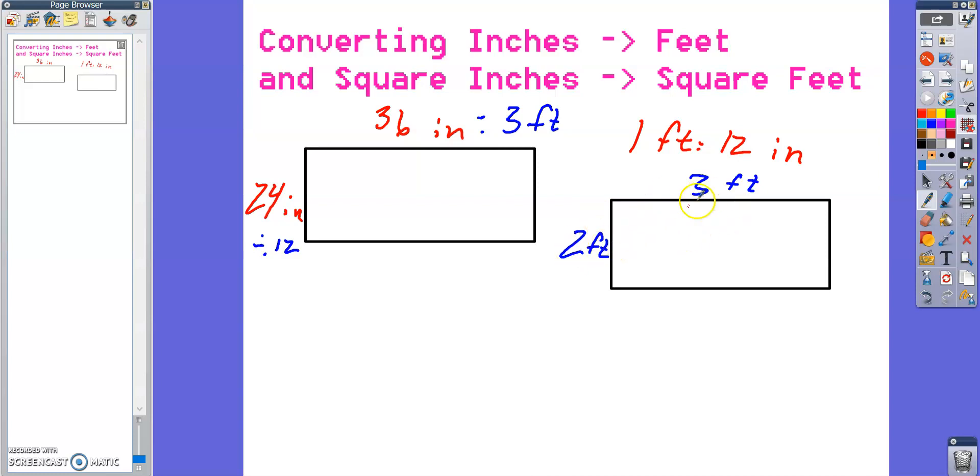So 3 times 2 is 6 square feet. Pretty simple, right?